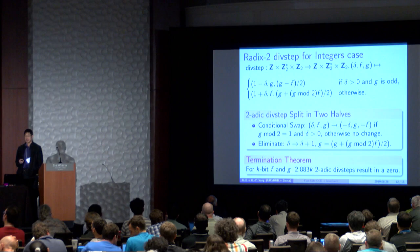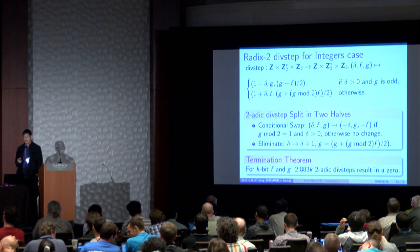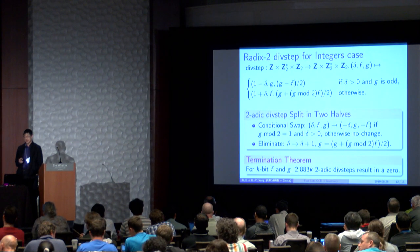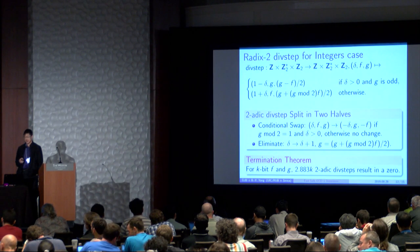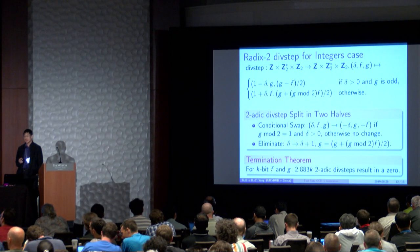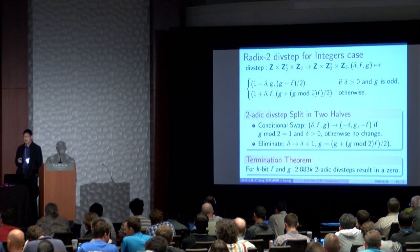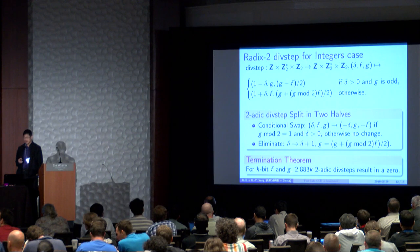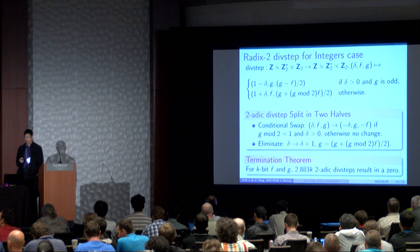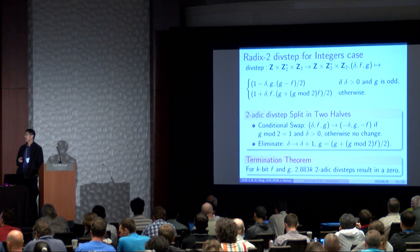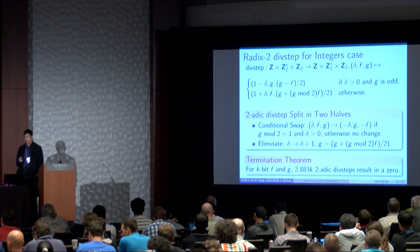First, let's take a look at the integer case. We have a radix 2 analog for the divstep, and we can consider this as a map from the integers times the two-adic integers with odd numbers and all the two-adic integers to itself. And there's a formula here that gives the results.